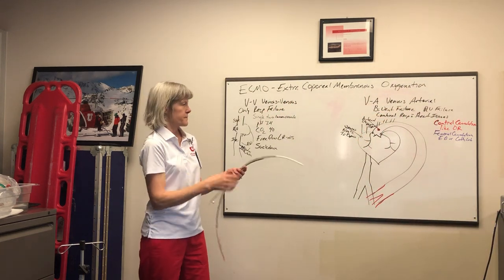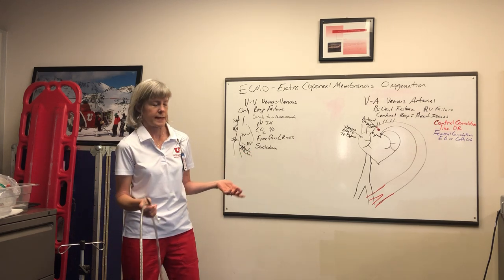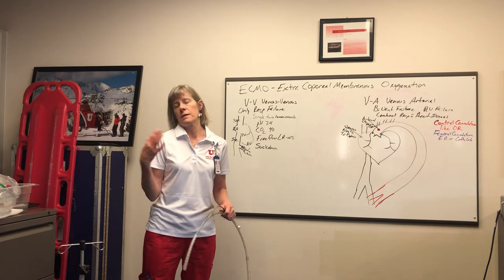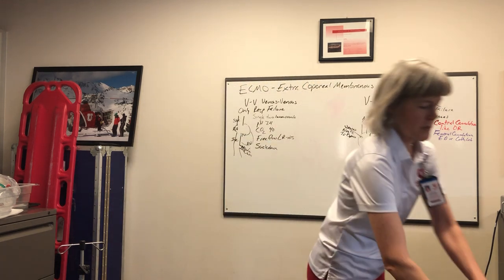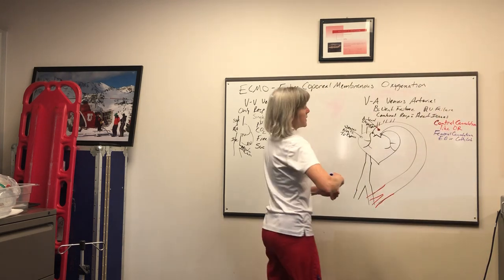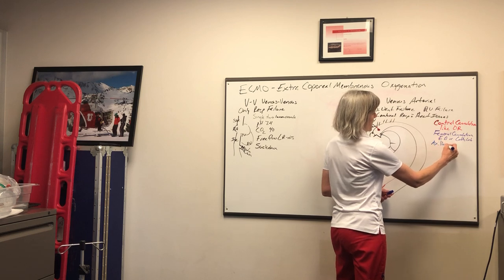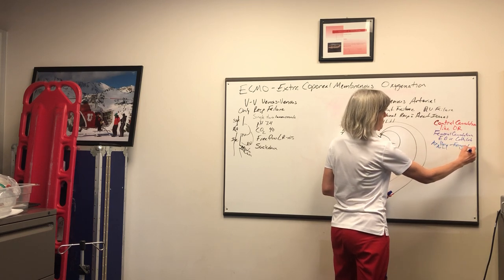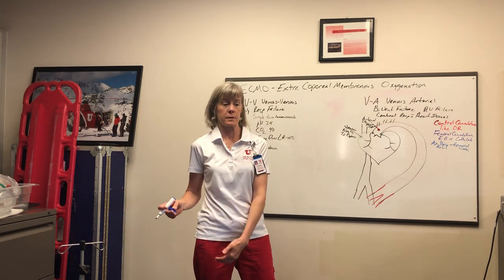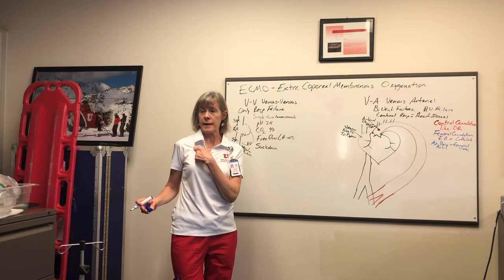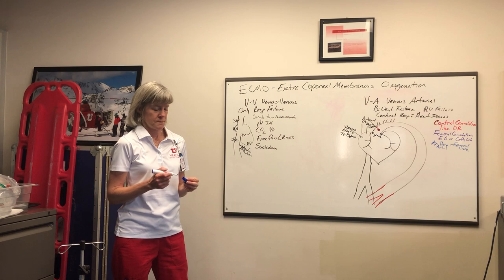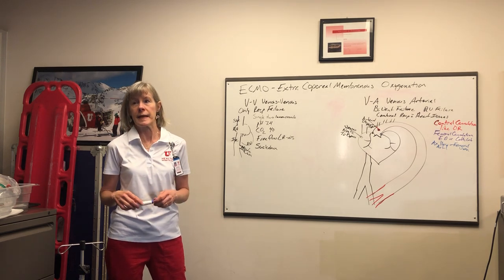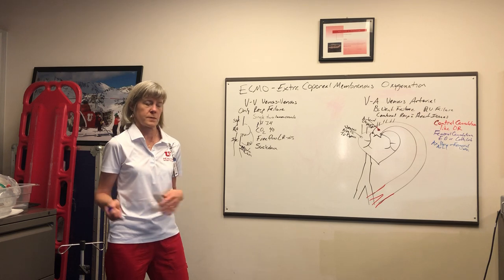We have fancy securement devices for these. Those are the two main ways we cannulate. But sometimes you can't access the femoral artery or vein, so we could also do axillary-femoral - axillary artery and femoral vein - using the same long femoral venous cannula but putting the arterial cannula in the axillary artery. There are lots of other ways to do it. It's important to know the cannulation before leaving to pick up a patient.